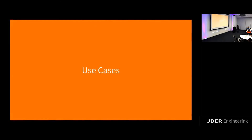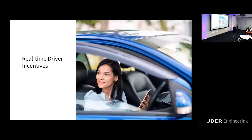Now we know how we build Uber's streaming platform. Let's go through some use cases to see how we use this platform to power Uber's real business. The first is the real-time driver incentive system. In the old days, Uber's driver incentive system was weekly — at the end of the week, a driver could see how much incentive they earned, which was not very transparent. So we built a real-time driver incentive system: whenever a driver finishes a trip, within seconds they can see their incentive update on their app, which has greatly added transparency to the system.